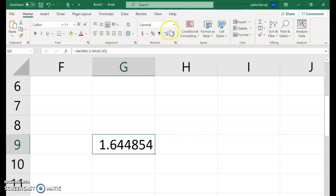So we're going to round this to two decimal places. So our Z score is 1.64.